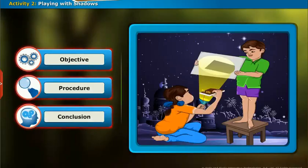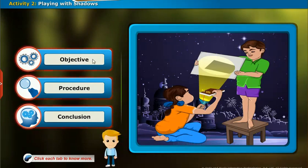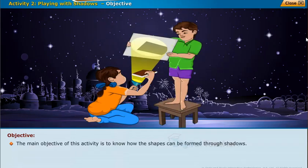Here we will do an activity to know how these shapes can be formed through shadows. Click each tab to know more. The main objective of this activity is to know how the shapes can be formed through shadows.